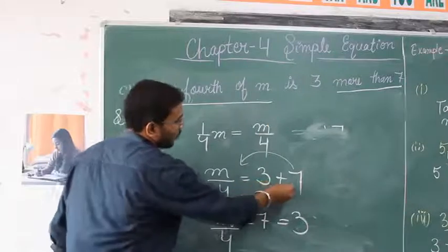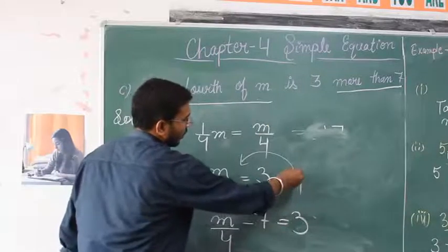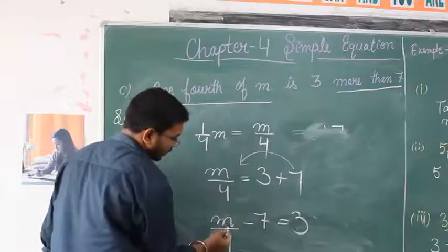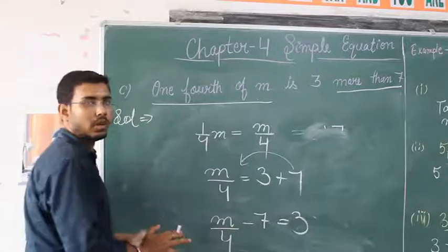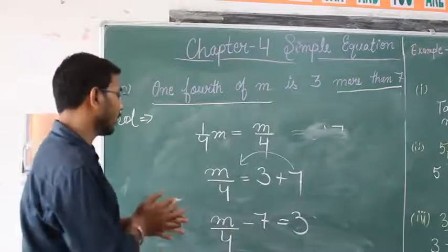When we transfer 7 to the left side, the equation becomes m by 4 minus 7 equals 3. From here we can easily find the value of m.